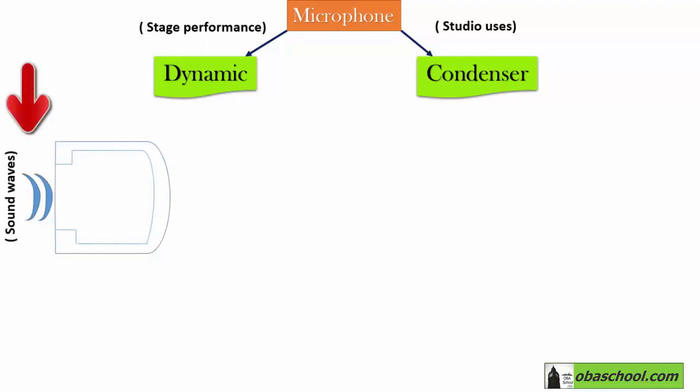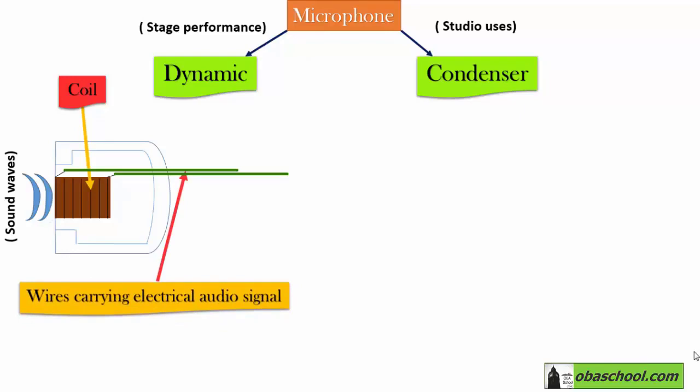The dynamic microphone will be represented in the following sketch. The sound wave will pass through this part where a coil is found, as you can see in this figure. The coil is an iron wire wrapped around itself found inside the microphone. Also we have wires carrying electrical audio signal, which is the sound that enters the microphone.